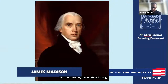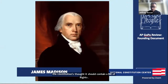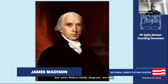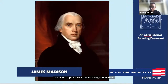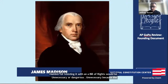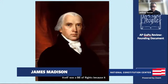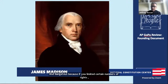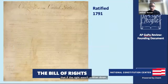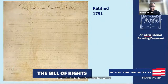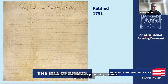The three who refused to sign thought the Constitution should contain a bill of rights. James Madison initially disagreed, then changed his mind because of pressure in the ratifying conventions. Madison's initial reasons for resisting were that a bill of rights would be unnecessary — because the Constitution itself was a bill of rights granting Congress no power to infringe free speech — and dangerous, because if you listed certain rights, people might wrongly assume unlisted rights weren't protected. But in the face of opposition from Mason, Randolph, Gerry, and other anti-federalists, Madison changed his mind, and the Bill of Rights was ratified on December 15, 1791.